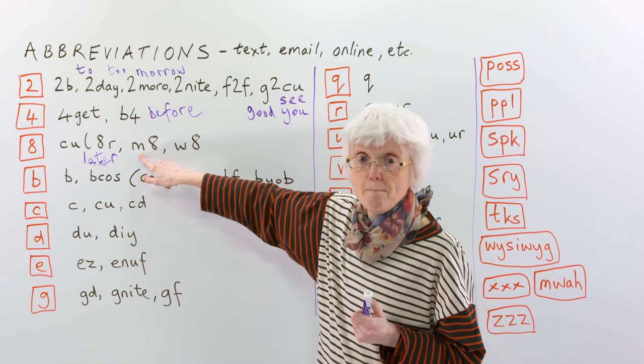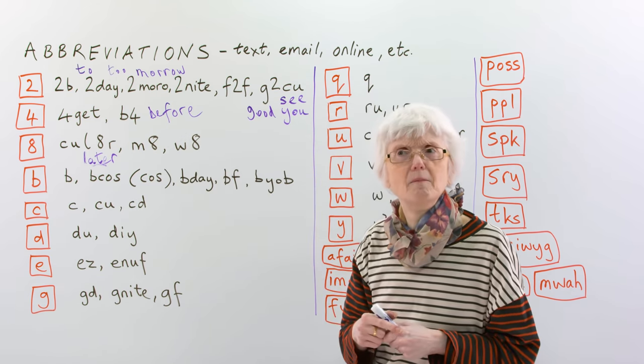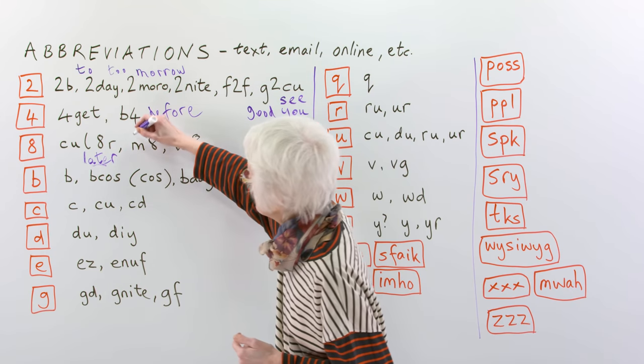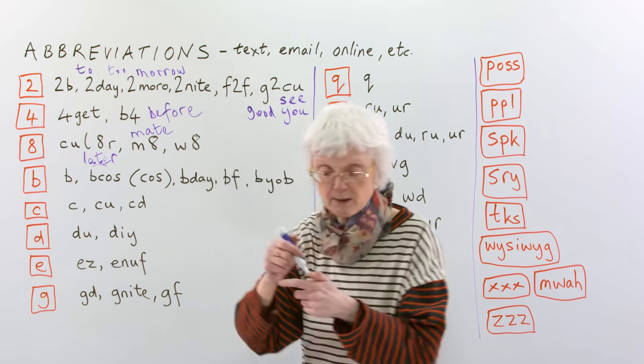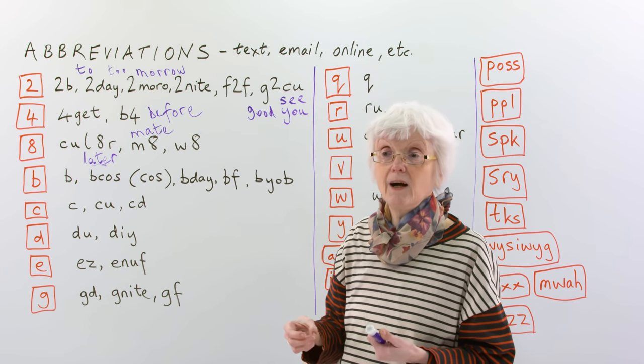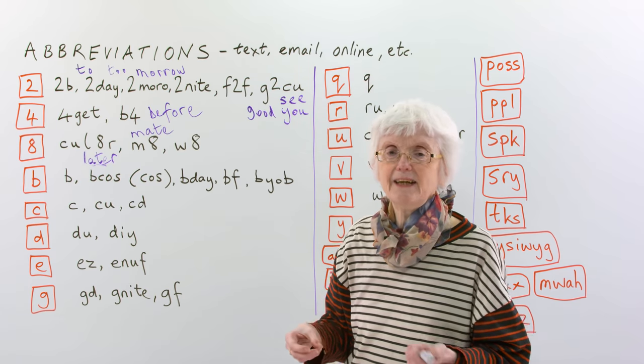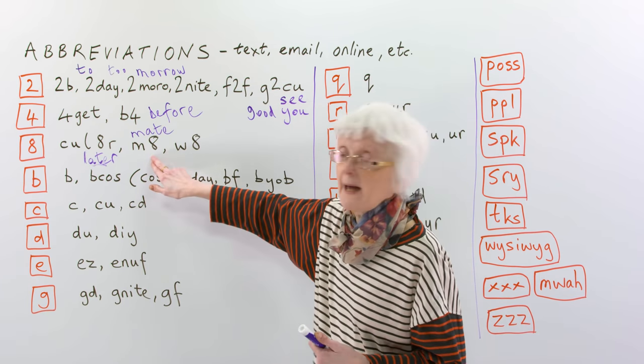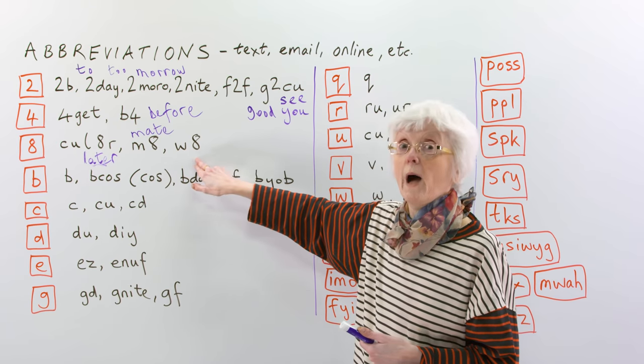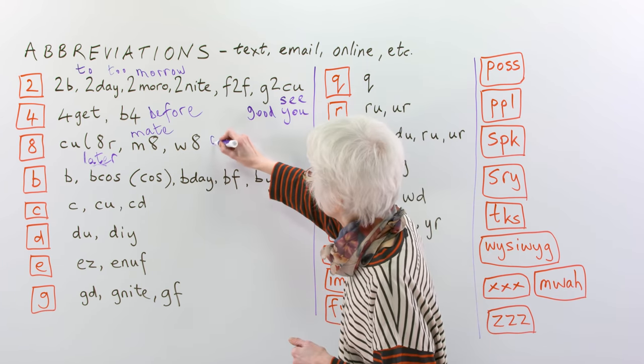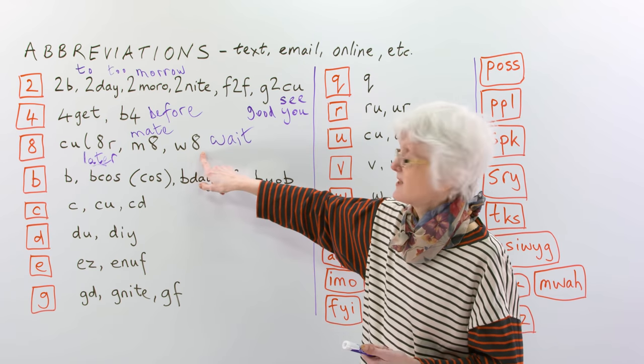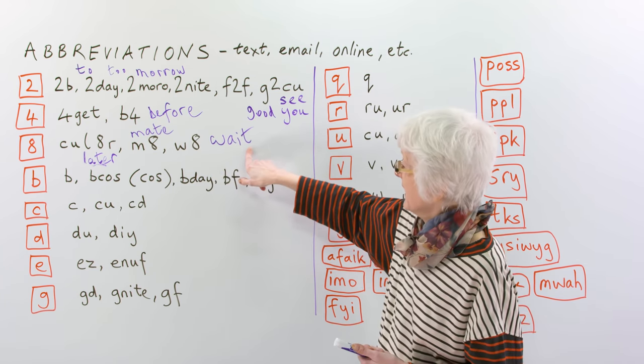This one is mm-ate, mate. I don't know if that word is used so much in America or Canada, but in the UK people say mate, mate when they mean friend. My mate. It's an informal word for friend. And, oh, how are you doing, mate? How are you, mate? It's a very friendly sort of word to use. So, mate. Wait. And this one, can you guess what this one is? W-8. Wait. Wait. Can you wait? W-8. Wait. Okay? So, they're quite useful.